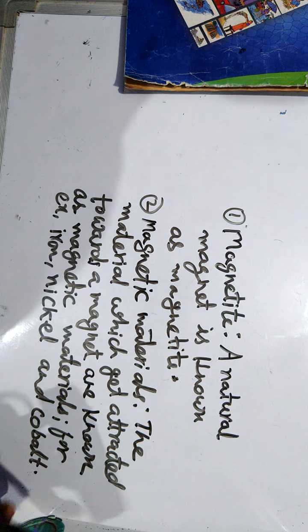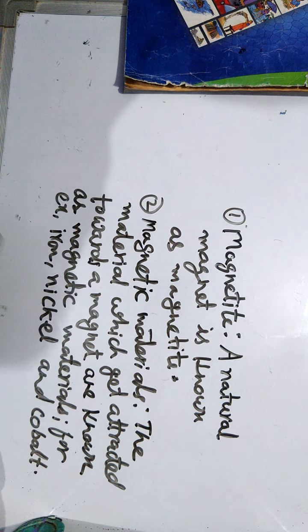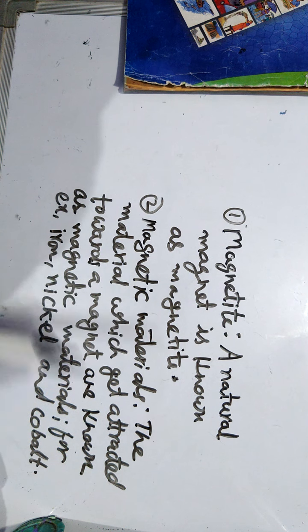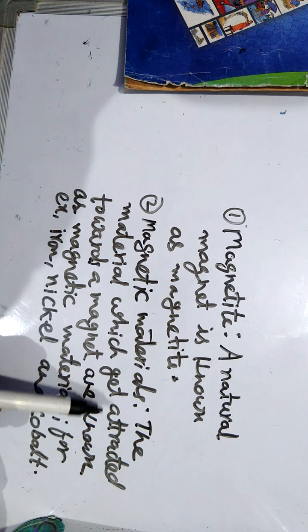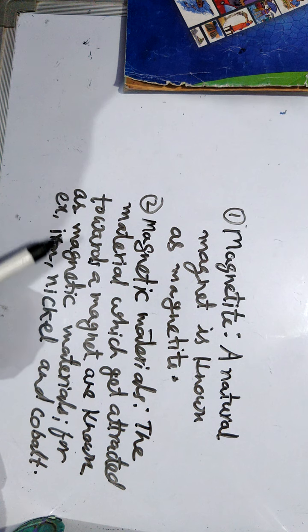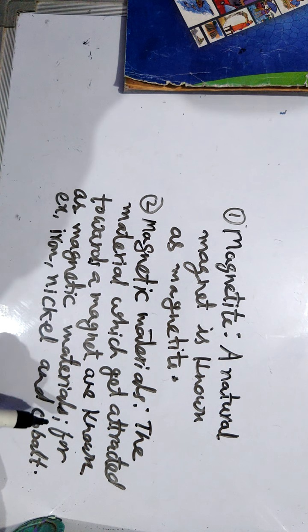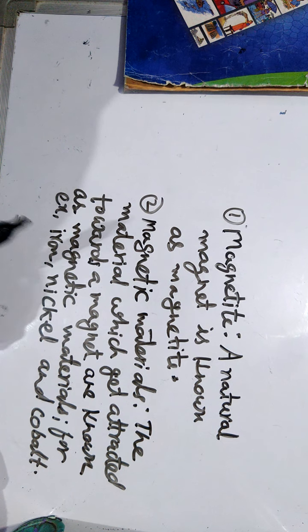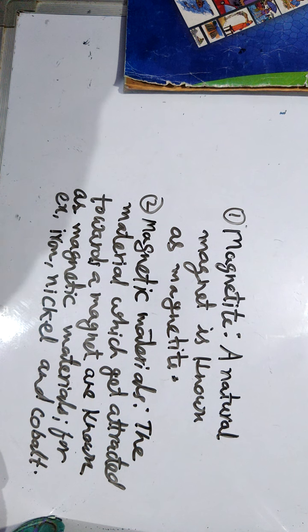Now, non-magnetic materials: the definition is just the opposite. The materials which do not get attracted towards a magnet are known as non-magnetic materials. Examples: plastic, wood, paper, etc.